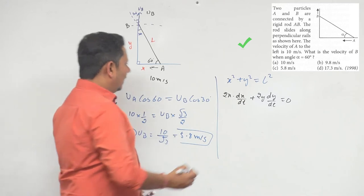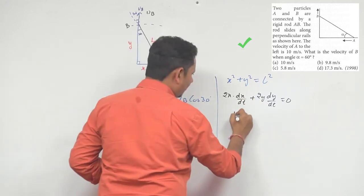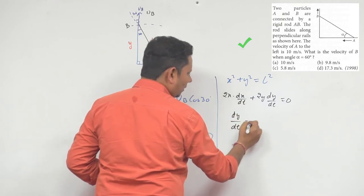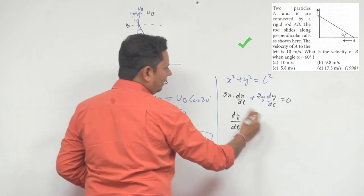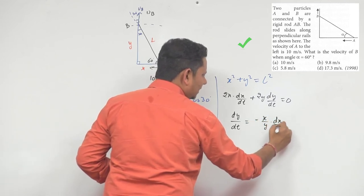Now, if we notice this, it means that dy/dt will equal minus times x/y multiplied by dx/dt.